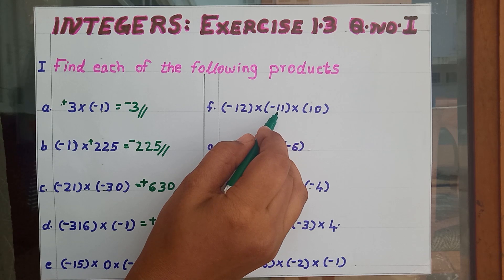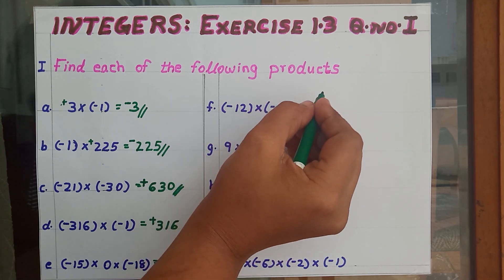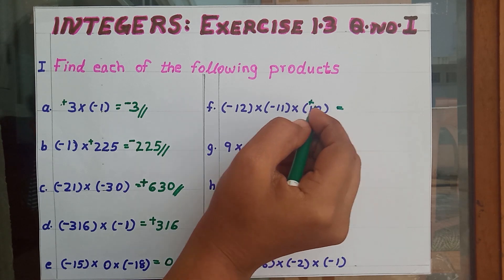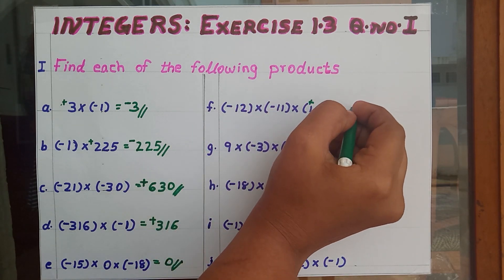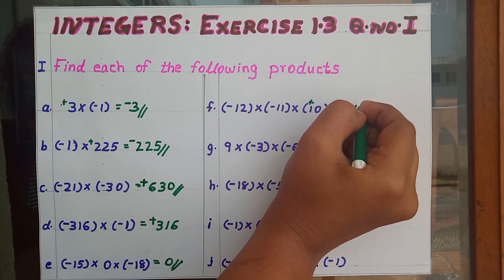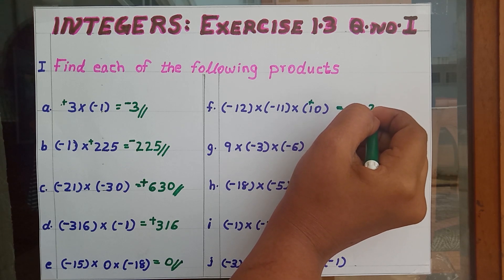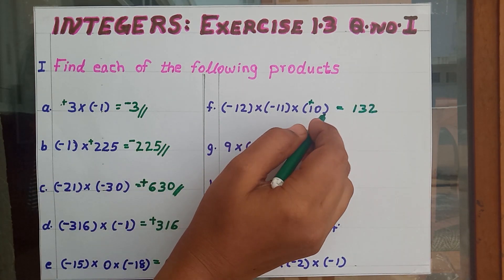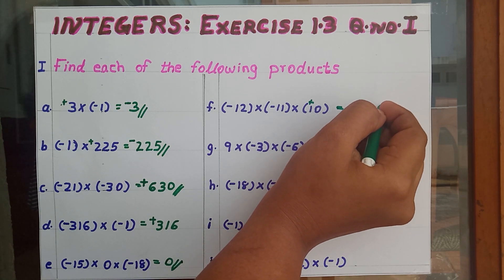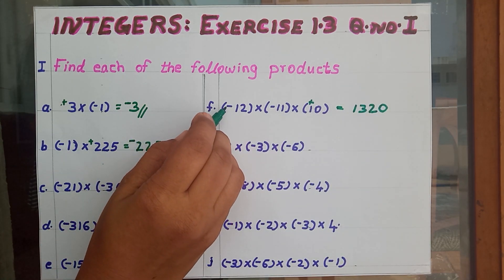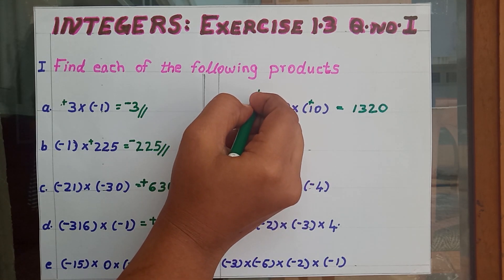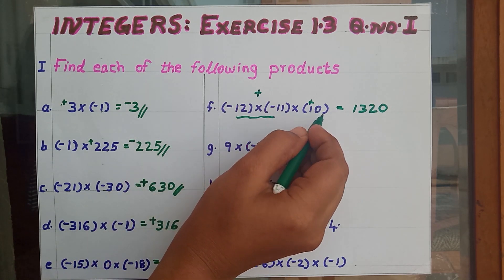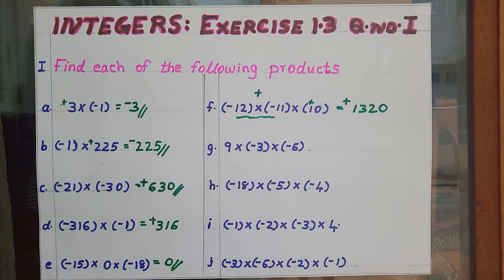Next one: minus 12 into minus 11 into positive 10. Equal to minus 12 into minus 11, which gives 132. Then multiplied by 10. Minus into minus gives plus, and plus into plus gives plus. So positive 1320 is our answer.